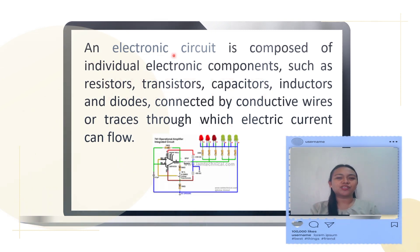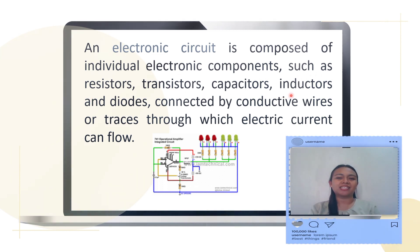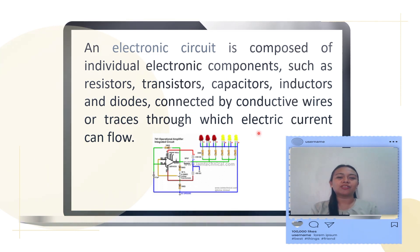An electronic circuit is composed of individual electronic components such as resistors, transistors, capacitors, inductors, and diodes, connected by conductive wires or traces through which electric current can flow.